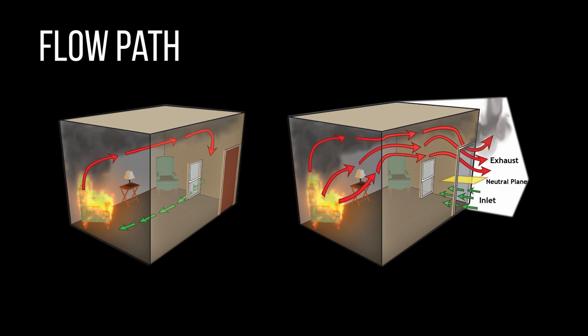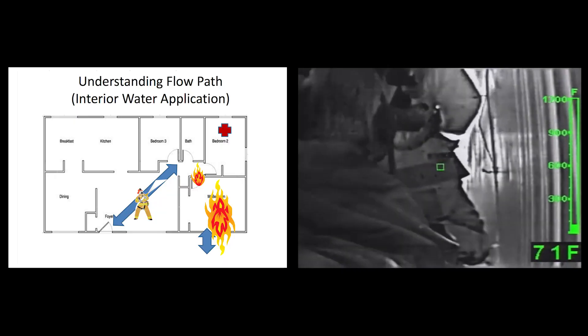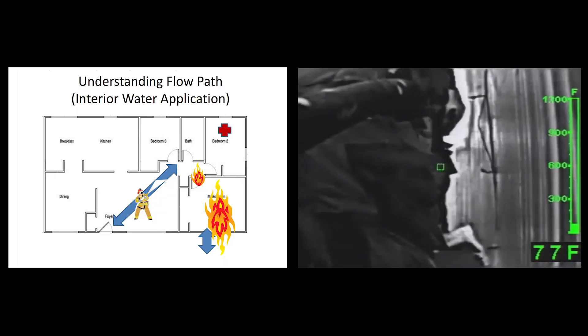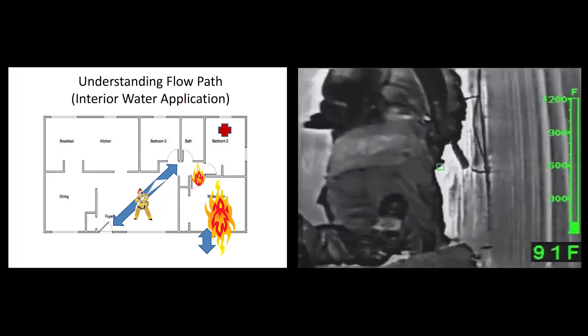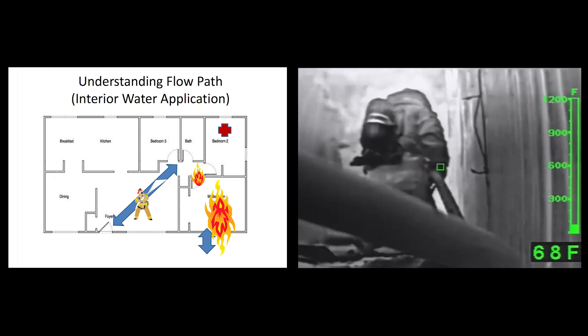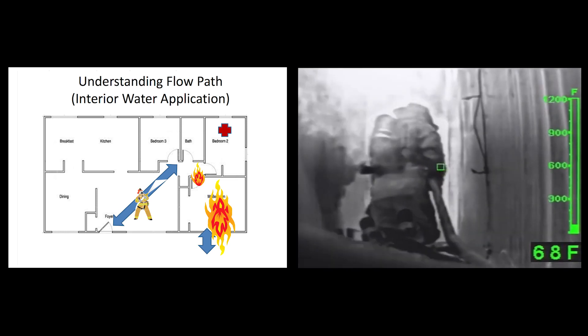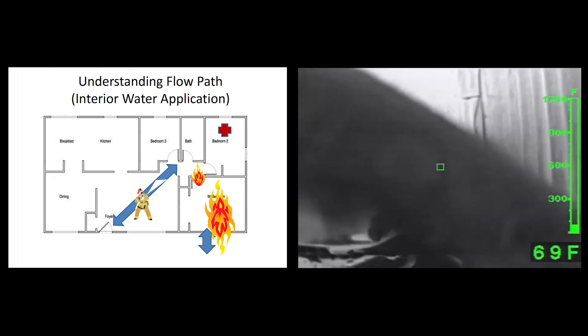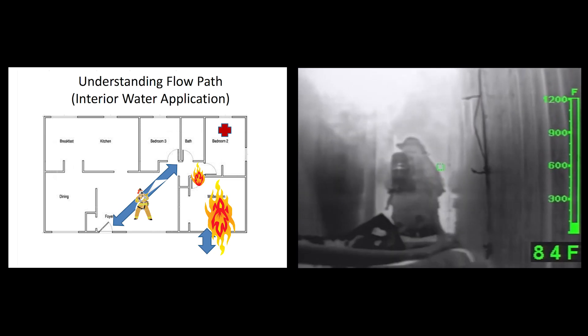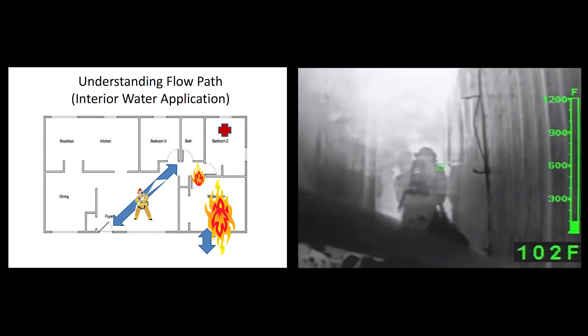During fire suppression, firefighters have the opportunity to take advantage of how water streams can alter this flow of smoke and heat. In some instances, it is advantageous to alter the flow. For example, during an interior attack when there is a vent opposite the advancing hose crew, entraining as much air as possible with the hose stream creates pressure that can push the products of combustion ahead of the advancing crew.